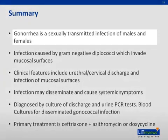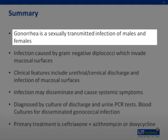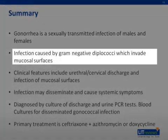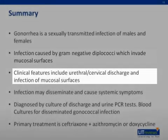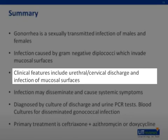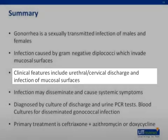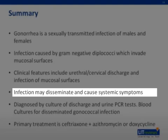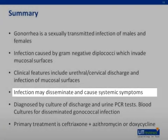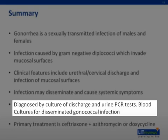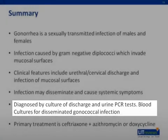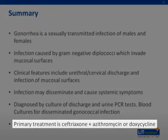To summarize — gonorrhea is a sexually transmitted infection of both males and females, caused by a gram-negative diplococcus which can invade virtually any mucosal surface, leading to discharge and inflammation of the affected mucosal surface. Infection may disseminate systemically in a minority of cases. Diagnosis is by culture of mucosal discharge or urine DNA testing; for disseminated infection, blood cultures are the diagnostic test of choice. Primary treatment is ceftriaxone, and you should also treat for chlamydia co-infection.